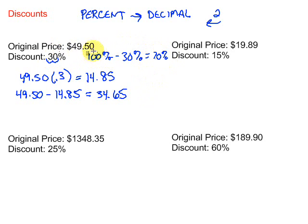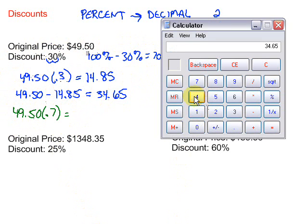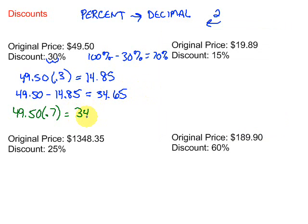So what we can do, rather than finding 30% and then subtracting, we could just find 70% and that will be our answer. So let's take a look at this and just see if it works. So we're going to take 49.50 and we're going to find 70% of it. Of suggests multiplication, so we're going to take it times 0.7 or 0.70, same thing. And we multiply, so 49.50 times 0.7 gives us, sure enough, 34.65.